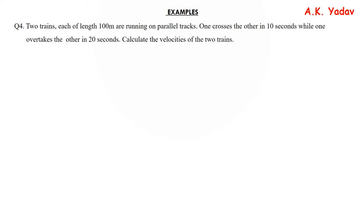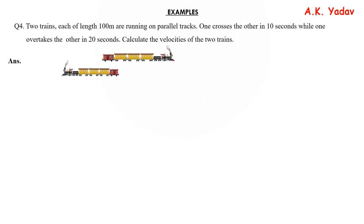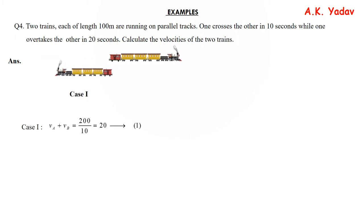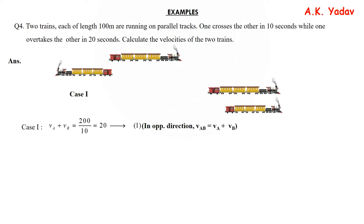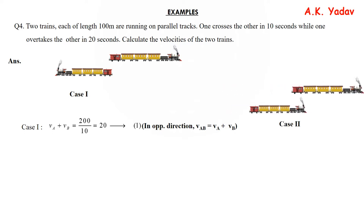Let's move to question number 4. Two trains each of length 100 m run on parallel tracks. One crosses the other in 10 seconds, while the other overtakes in 20 seconds. Crossing means opposite direction, so VA + VB = 200 / 10 = 20 m/s (equation 1). Overtaking means same direction, so VA − VB = 200 / 20 = 10 m/s (equation 2).